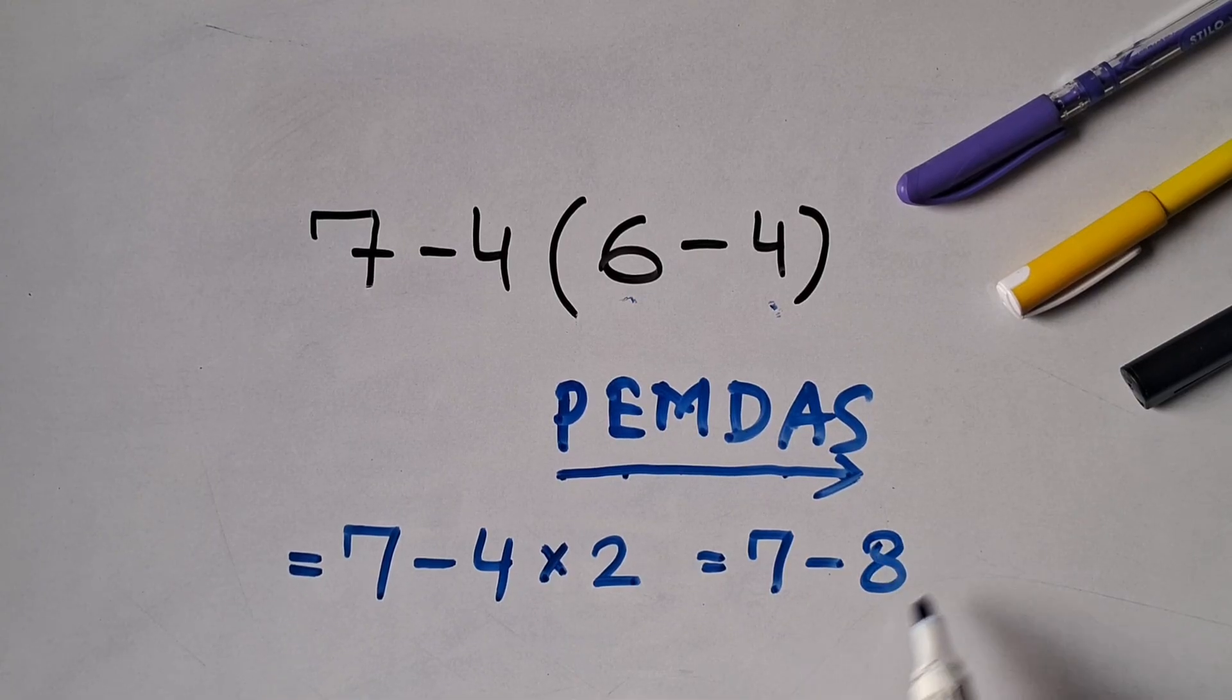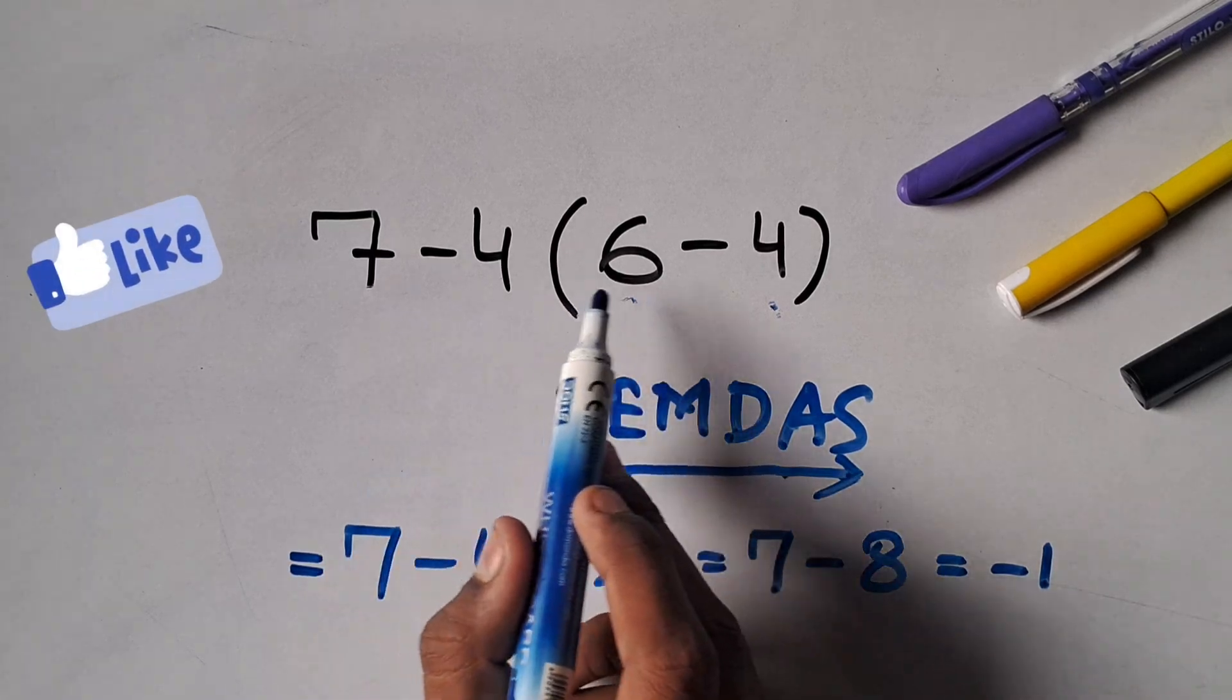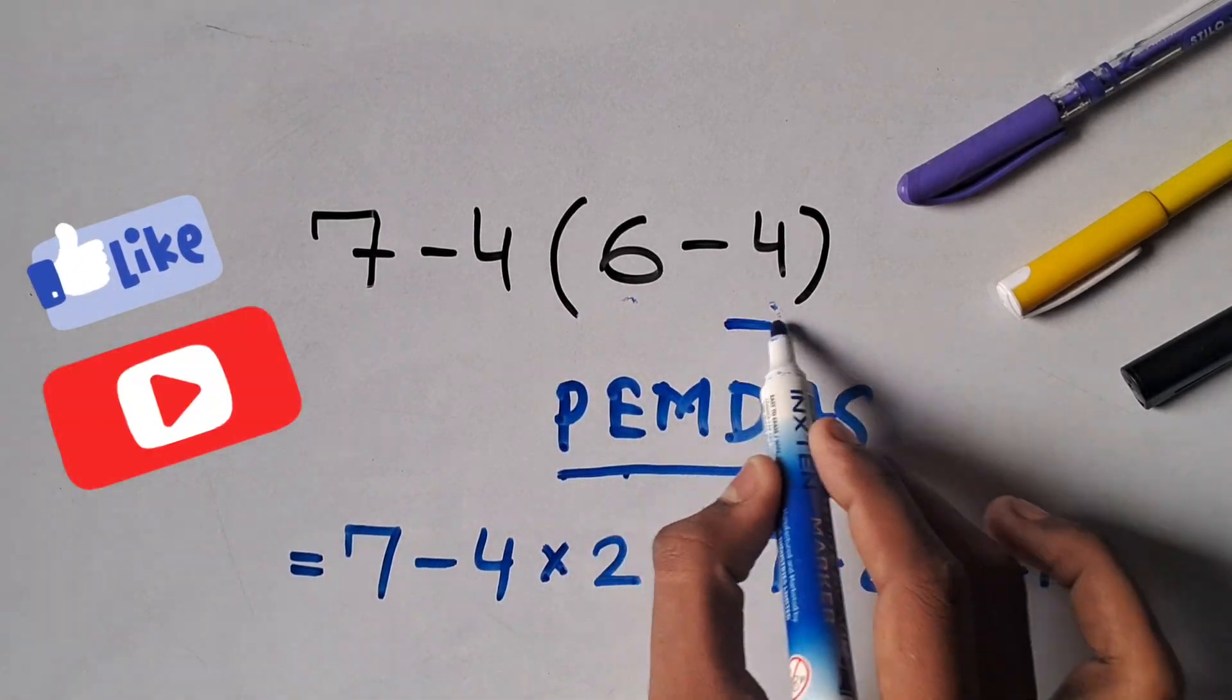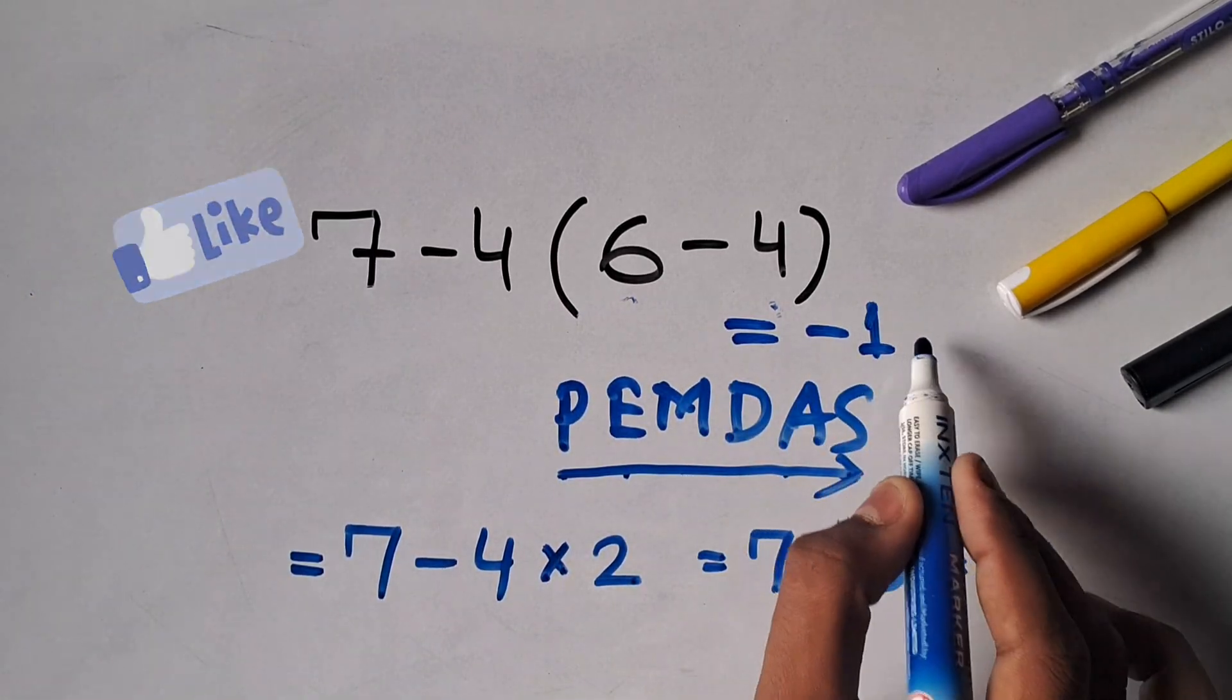So 7 minus 8 is equals to minus 1. Therefore, 7 minus 4 times (6 minus 4) is equals to minus 1.